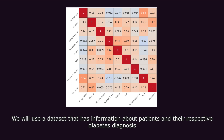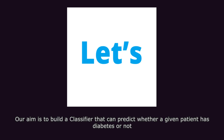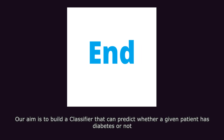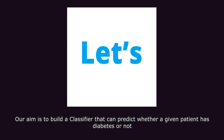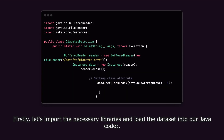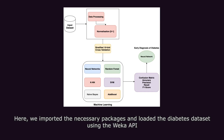We will use a dataset that has information about patients and their respective diabetes diagnosis. Our aim is to build a classifier that can predict whether a given patient has diabetes or not. First, let's import the necessary libraries and load the dataset into our Java code. Here, we imported the necessary packages and loaded the diabetes dataset using the WEKA API.